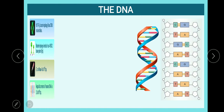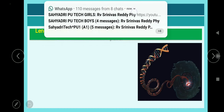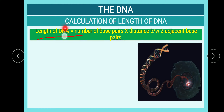This covers the calculation of the length of DNA for different organisms. The formula is: length of DNA equals number of base pairs multiplied by the distance between two adjacent base pairs. Conversely, if you want to identify the number of base pairs, divide the length by the distance between two base pairs.